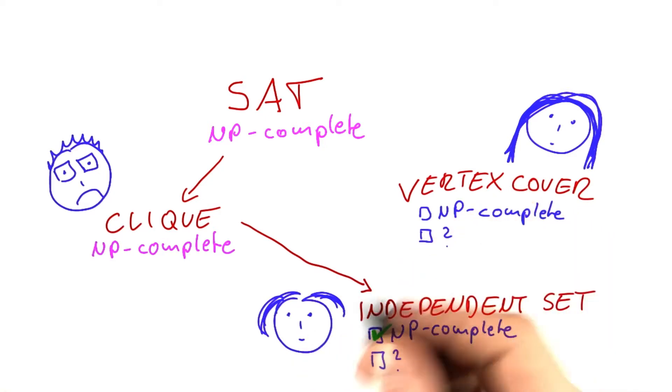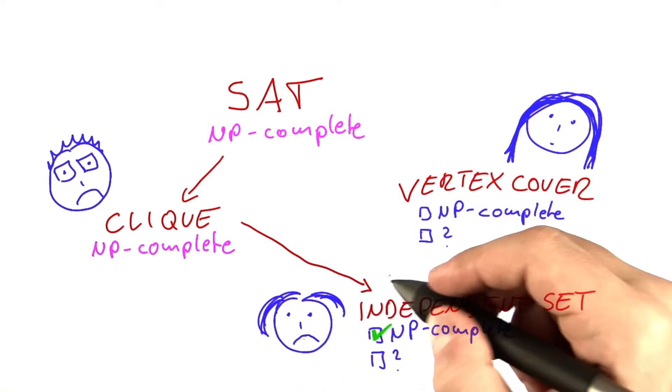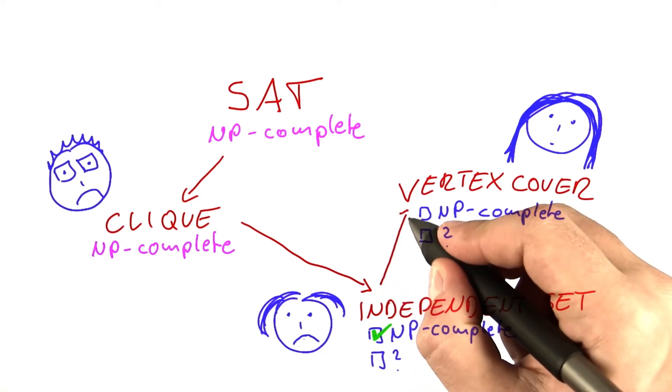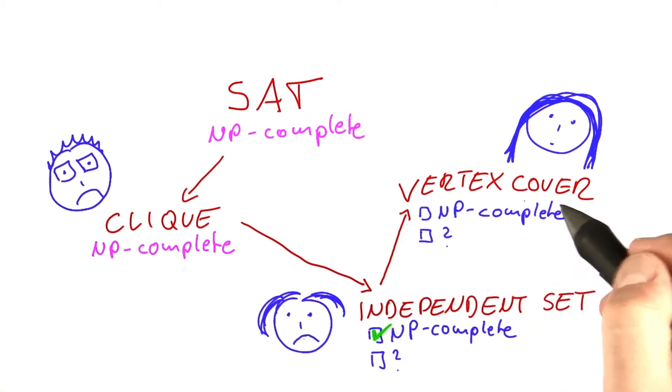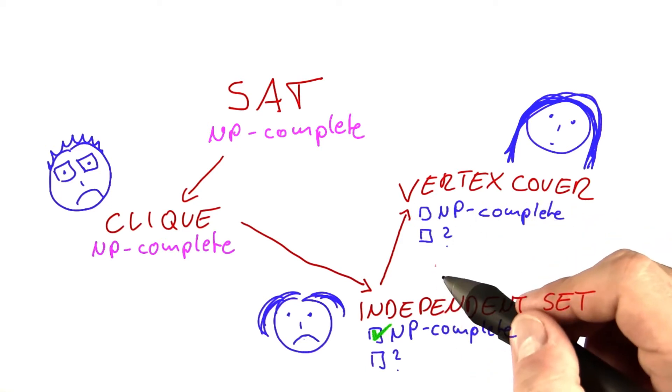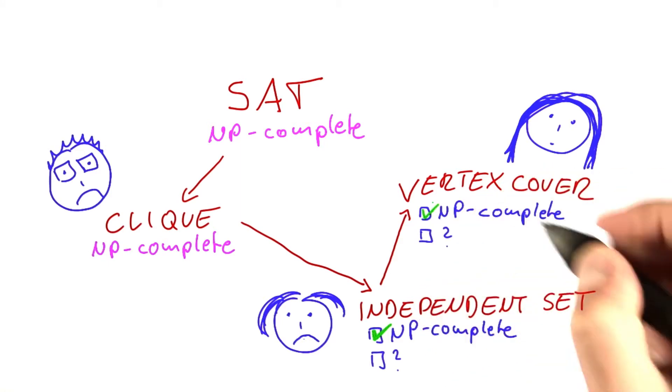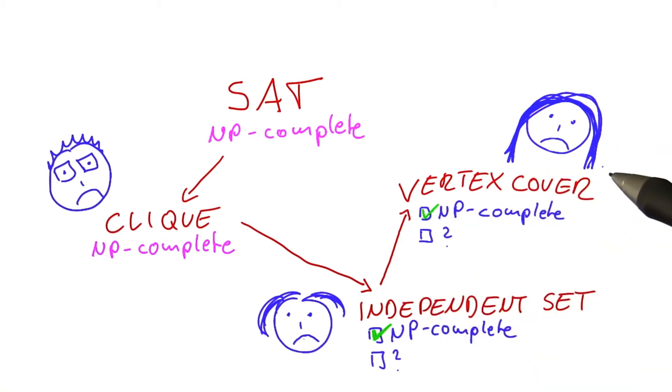So we already have that reduction down here, which of course will make Carol quite unhappy. And we also had the reduction from independent set to vertex cover because we showed that solving vertex cover on a graph is basically the same thing as solving independent set. So vertex cover is also NP-complete, so Alice is now unhappy as well.